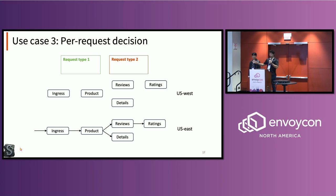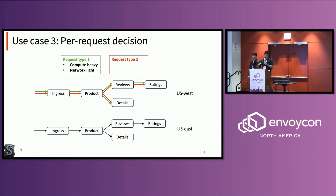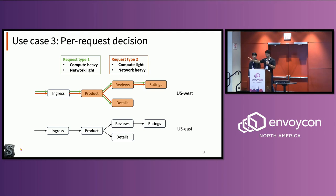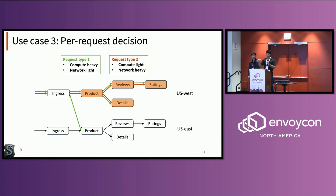The third use case is when you have different request classes — how should you treat those in a multi-cluster setting? Let's say you have two request types with the same call graph but different characteristics. Request type 1 is very compute-heavy, triggering many CPU cycles but sending little data over the network. Request type 2 is the opposite — very compute-light but data-heavy. When you have overload in US West, the correct thing is to route the compute-heavy requests away first so the local cluster gets relieved, and let the network-heavy requests take advantage of the local network. Classifying this is hard, and that's something we aim to do as well.